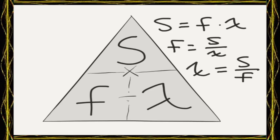And it's the magic triangle. On top S means speed, on bottom left side F means frequency, the last weird symbol means wavelength.